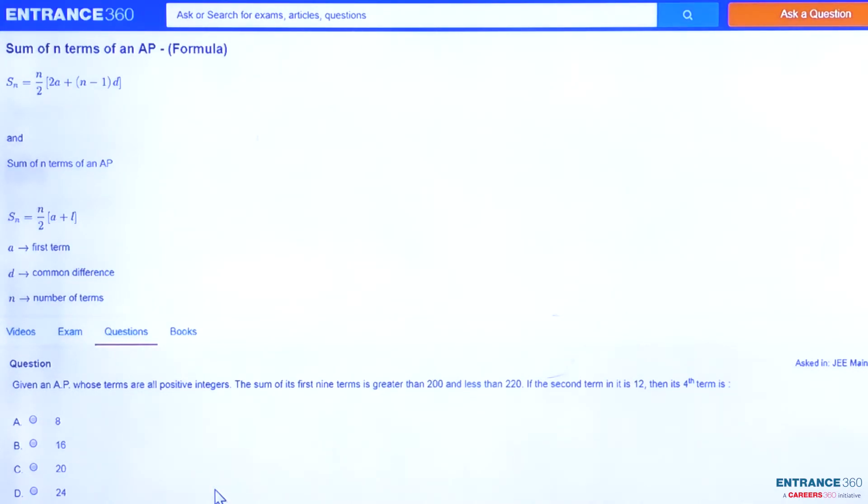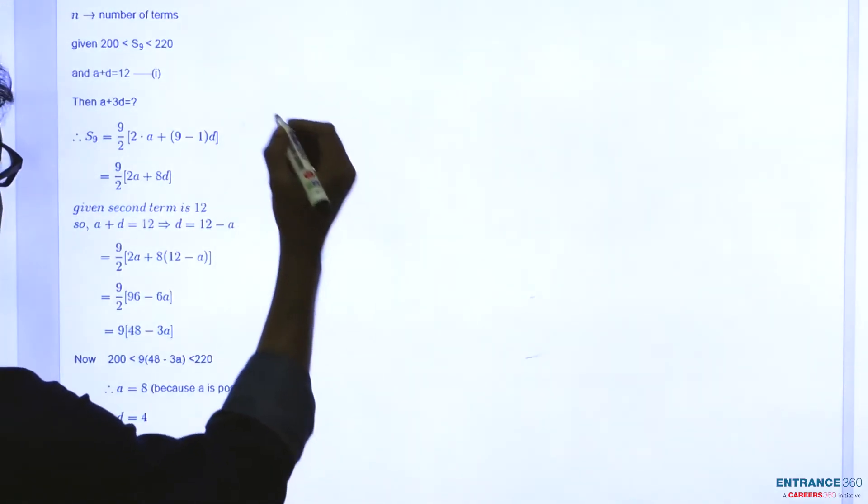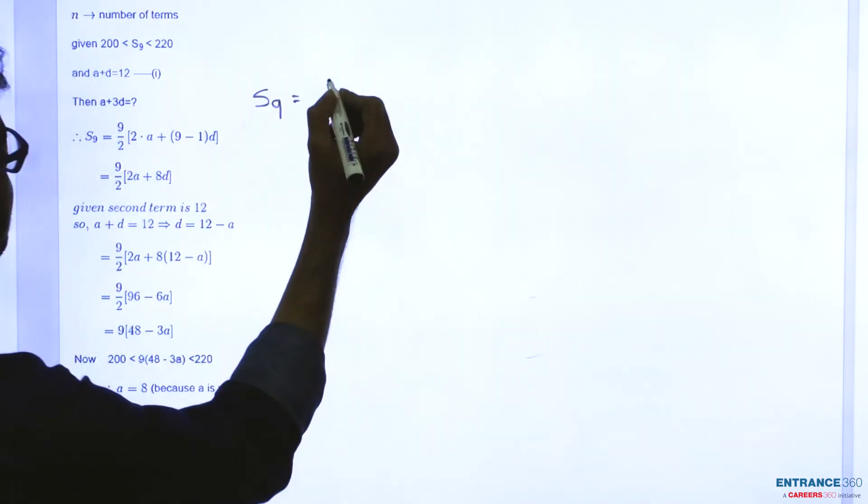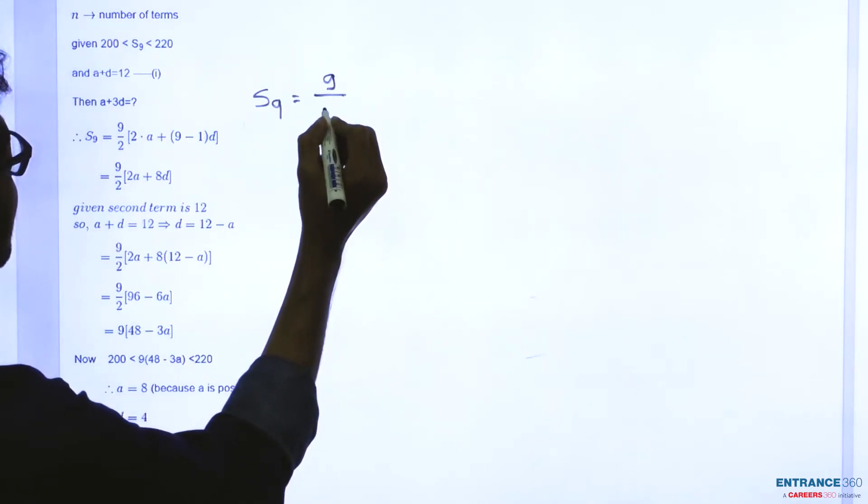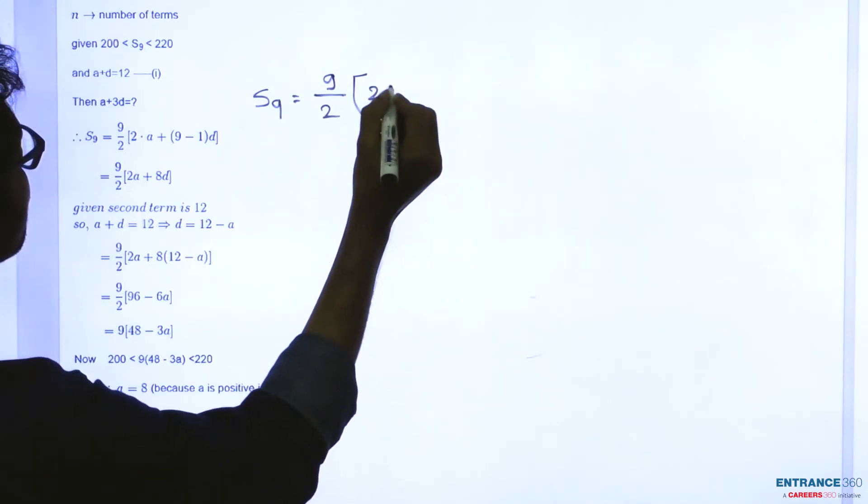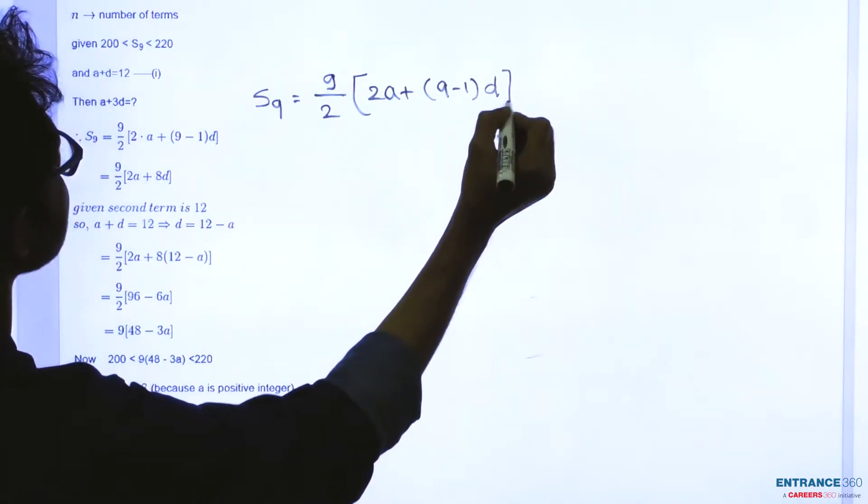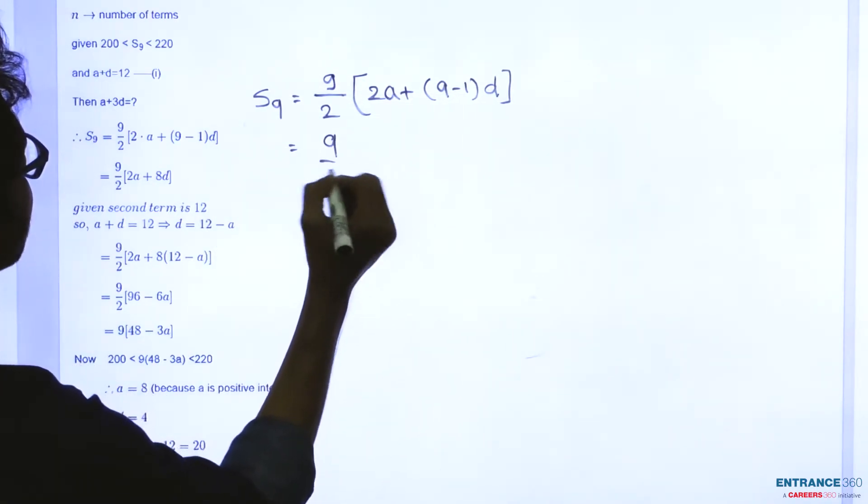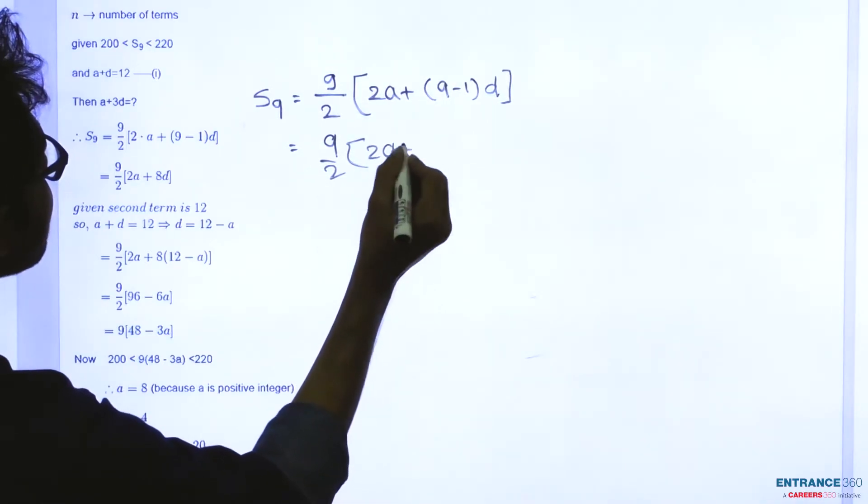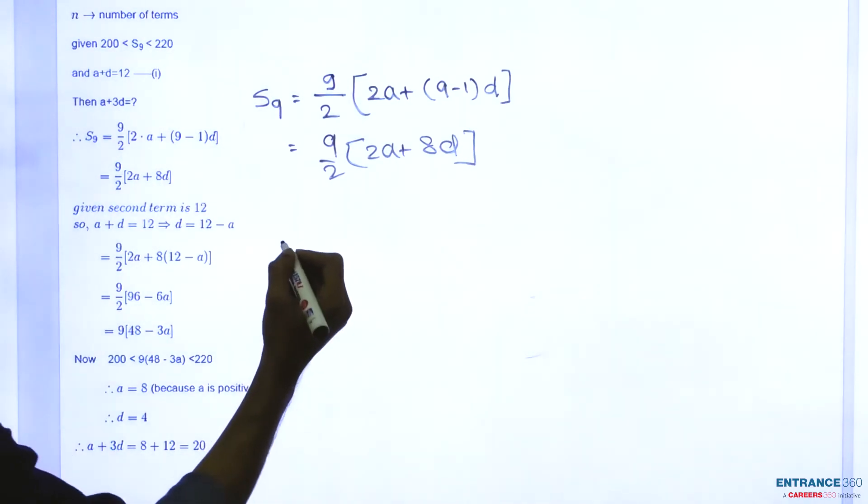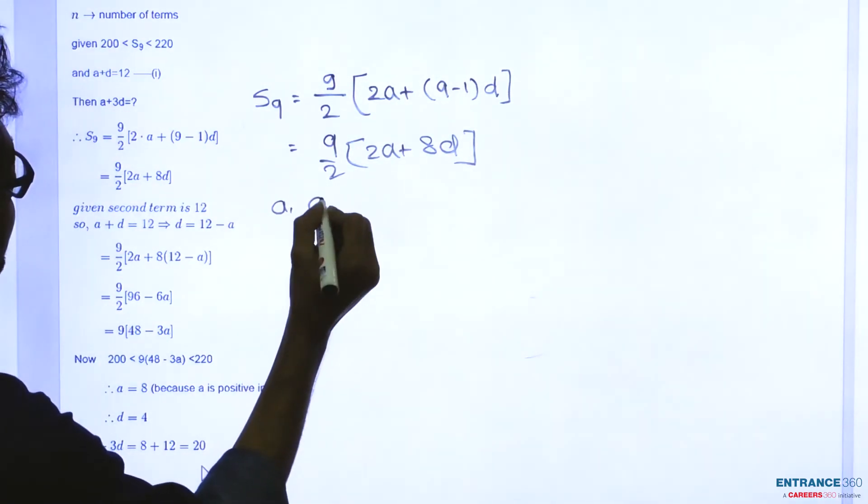In this question, we will use the concept of sum of n terms of an arithmetic progression. The sum of 9 terms is S₉ = n/2[2a + (n-1)d], where n is 9. Substituting, we get S₉ = 9/2[2a + 8d].